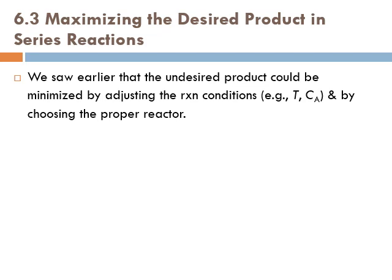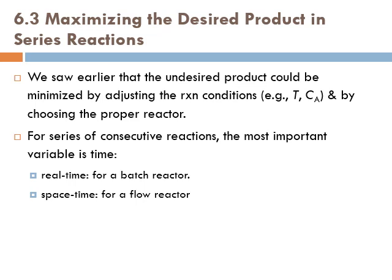That was for parallel reactions. For series or consecutive reactions, the most important variable is time — whether it is the real time for a batch reactor or the space time for a flow reactor, because space time represents the residence time. The higher the space time, the higher the residence time of the molecules inside the reactor for flow reactors.